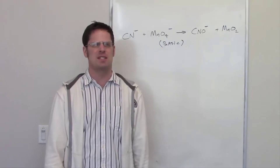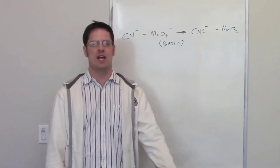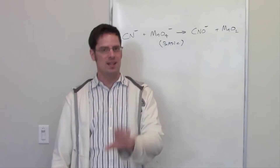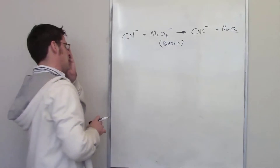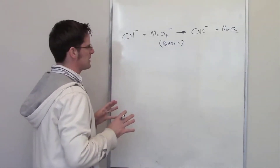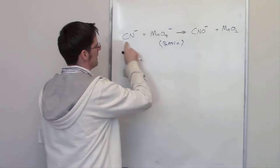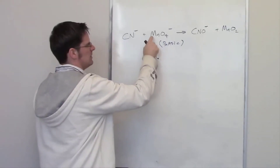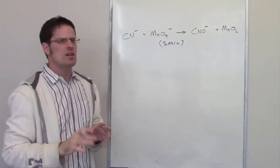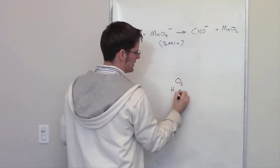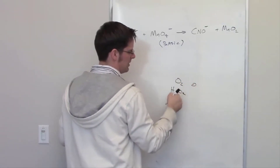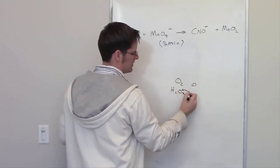So what are steps one through three? Step one of acidic conditions says divide the original redox reaction into two half reactions, one for oxidation and the other for reduction. This might be a bit trickier than the previous example. I'll begin by looking at the manganese here. Manganese is bonded to oxygens. Oxygen is pretty much always negative two, except for O₂ (oxidation number zero) or hydrogen peroxide (oxidation number negative one).